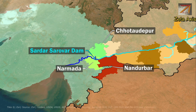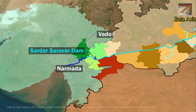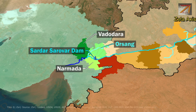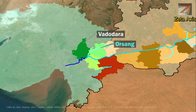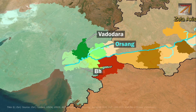Just downstream of Sardar Sarovar Dam is the Statue of Unity. On the border of Vadodara and Narmada district, the Orsang river joins the Narmada; it originates in Madhya Pradesh and flows through Chhota Udaipur and Vadodara districts in Gujarat before joining. The Narmada river then flows into the Arabian Sea in Bharuch district of Gujarat, forming a large estuary.